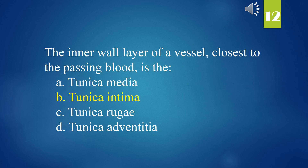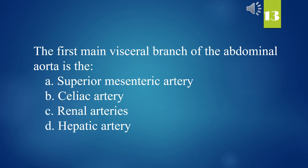The first main visceral branch of the abdominal aorta is: A. Superior mesenteric artery. B. Celiac artery. C. Renal arteries. D. Hepatic artery. The answer is B. Celiac artery.